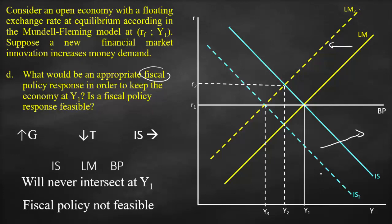because we cannot reach Y1 by intersecting the three curves, the new IS curve, LM2, and our balance of payment curve.